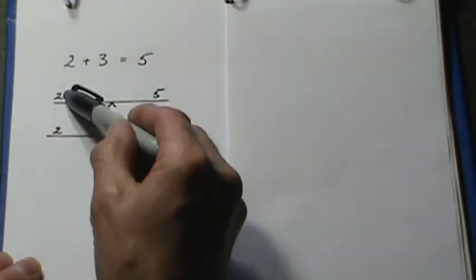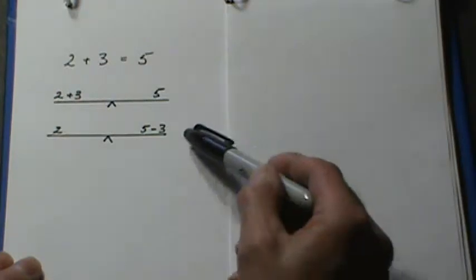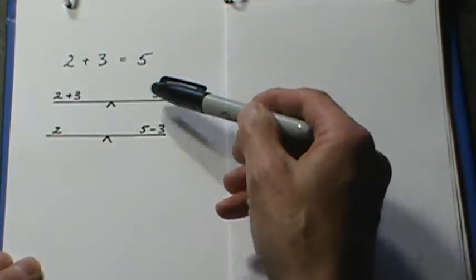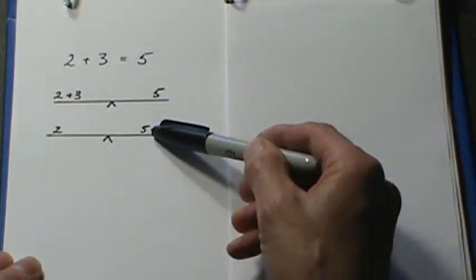Now you see, if I remove 3 from this side, I have to remove 3 from the other side. And it's still balanced. Here it's 5 equals 5. Here it's 2 equals 2.